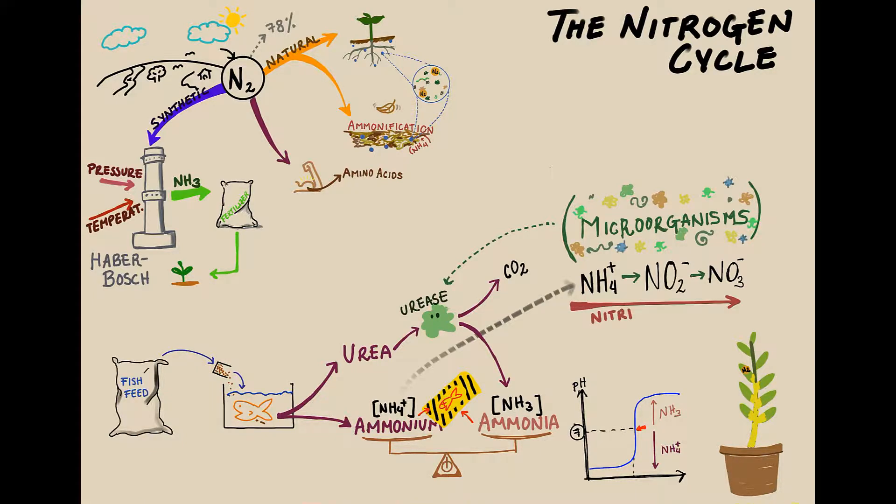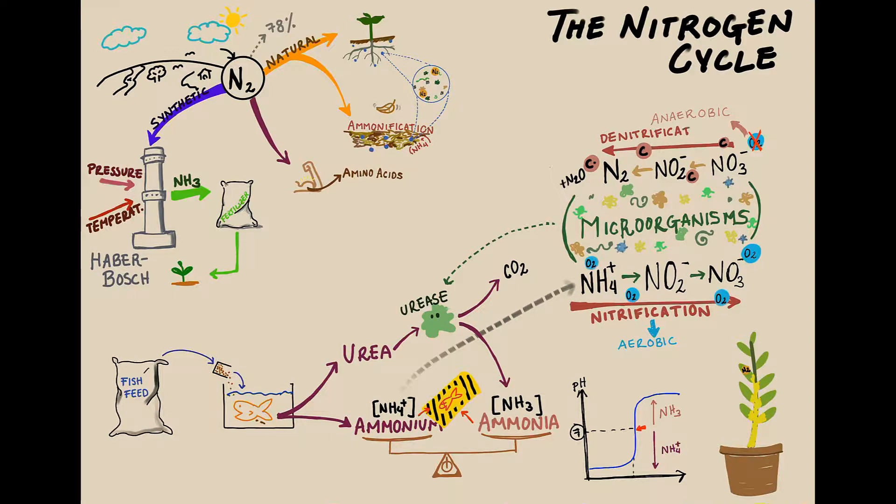The step from ammonium to nitrate is called nitrification and is occurring in an aerobic environment. If we have nitrate and no free oxygen is around, the environment is called anaerobic. In such an environment, the microorganisms together with the carbon source break up nitrate and nitrite to use the oxygen molecules. During that process, nitrogen gas N2 is formed but also other gases such as N2O or laughing gas. This process is then called denitrification.